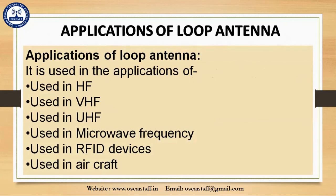Applications of loop antenna: they are used in HF (high frequency, 3 to 30 MHz), VHF (very high frequency, 30 to 300 MHz), UHF (ultra high frequency, 300 to 3000 MHz), and microwave frequency where they are used as field probes. They are also used in RFID devices — radio frequency identification — which are tracking systems that use radio frequency to search. Additionally, they are used in aircraft for direction finding.